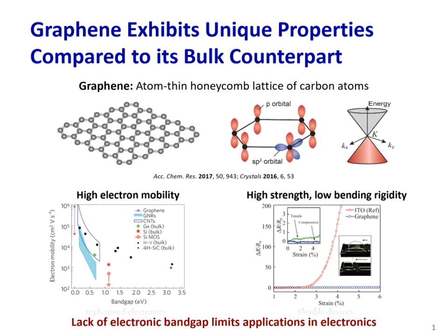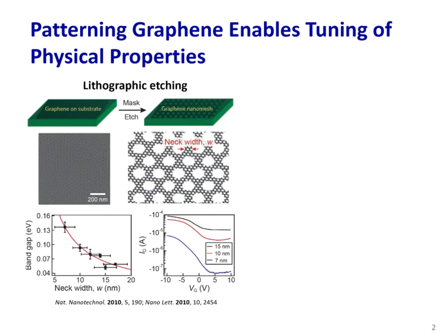Graphene, however, lacks a band gap, which limits the types of electronic devices that can be realized. One of the conventional methods to engineer electronic properties of graphene is to introduce nano-hole arrays. The scanning electron microscopy image here shows so-called graphene nanomesh created after oxygen plasma etching through a mask. The resulting graphene nanomesh exhibits a band gap because of lateral quantum confinement and shows rectifying behavior needed for diodes.